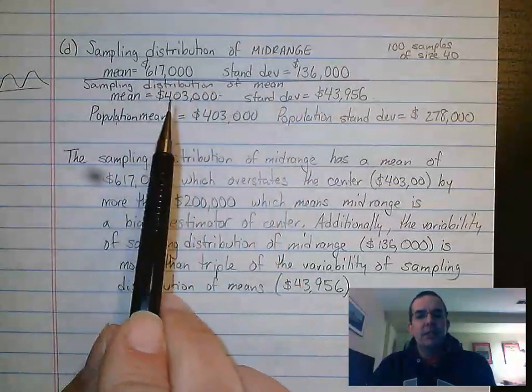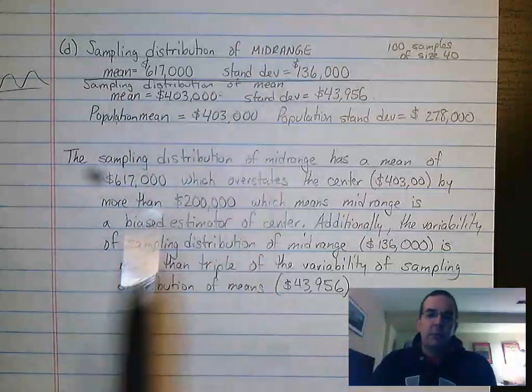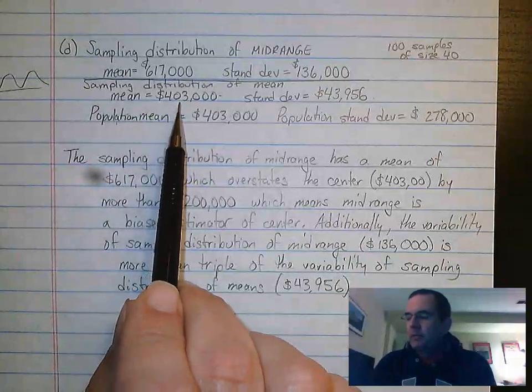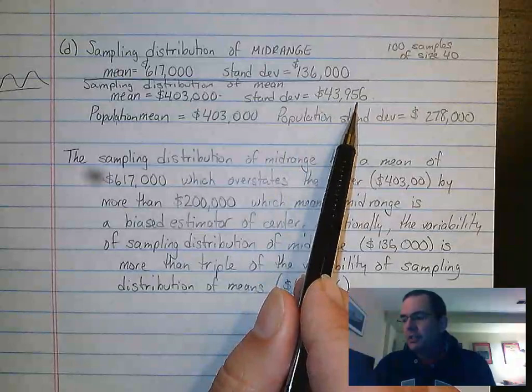I wanted to bring this information back from before. This was our sampling distribution of means from the previous problem from part B. We had a mean of $403,000 and a standard deviation of $43,956.